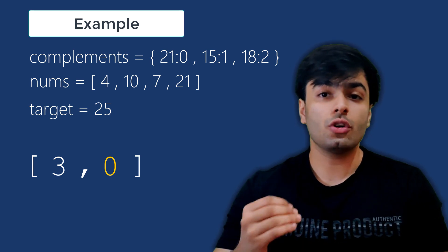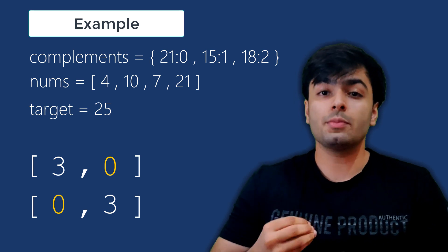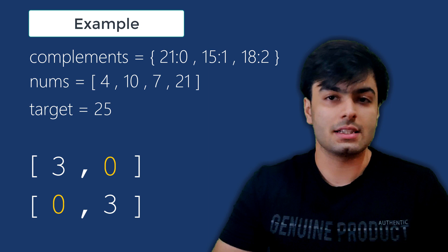So we would return 0, 3, or 3, 0, and at this point, we can stop because we know that the problem asks us to assume that there is only one complementary pair in the list.